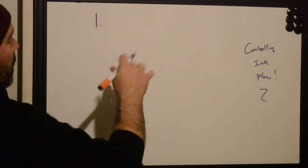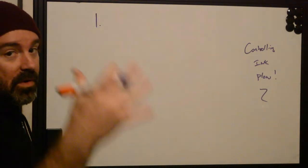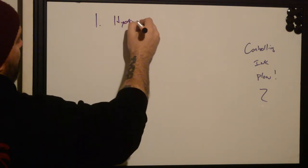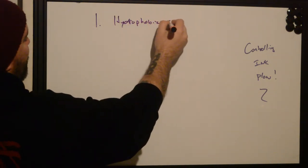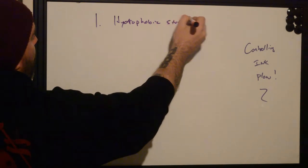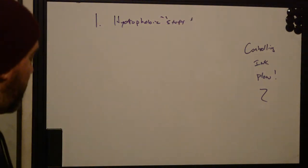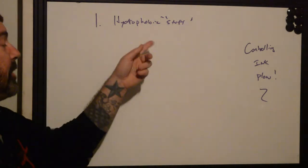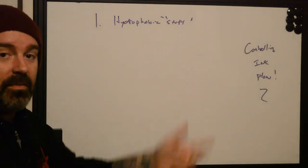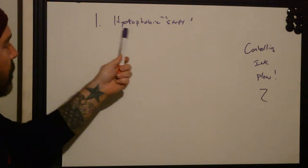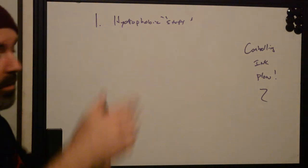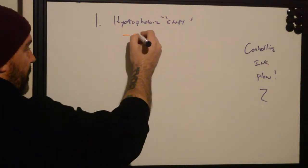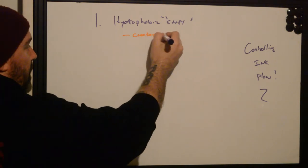So number one, regardless of what machine that you're using, we're going to have our hydrophobic stuff. What do we mean by hydrophobic stuff? We made a video about this. Hydrophobic stuff is Vaseline, A and D, any type of oil-based stuff that repels water. Hydro, water, phobic, scared of it, pushes it away. So our hydrophobic stuff is actually going to create a seal.